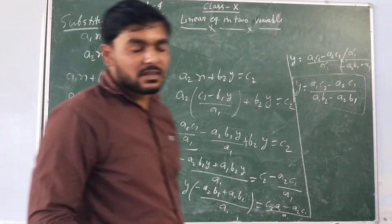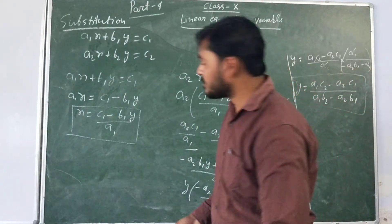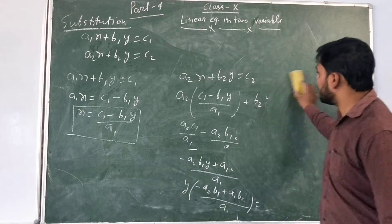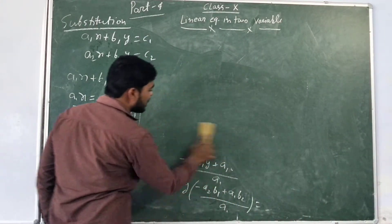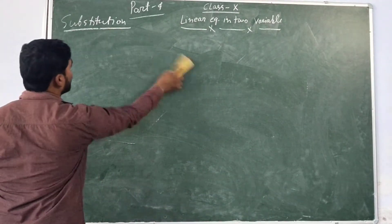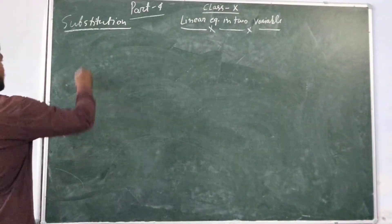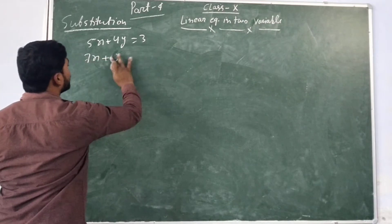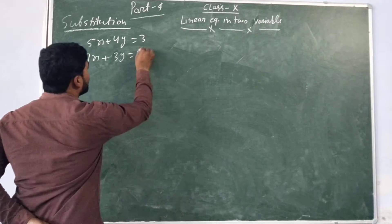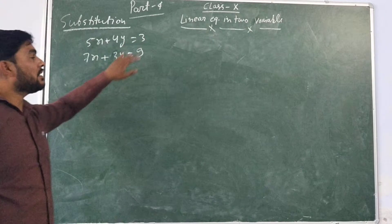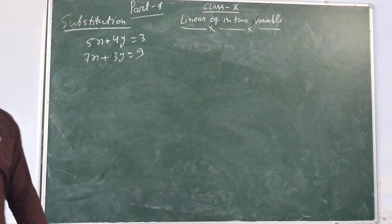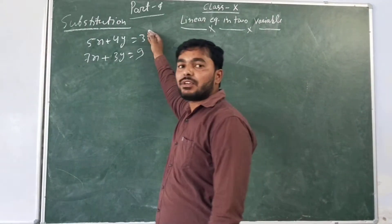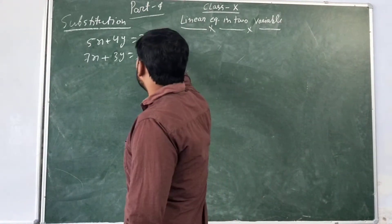This is in general form. Now we will take an example and solve for x and y. We are going to look at an example of two linear equations and solve by the substitution method. The equations are: 5x + 4y = 3 and 7x + 3y = 9. We take the first linear equation.